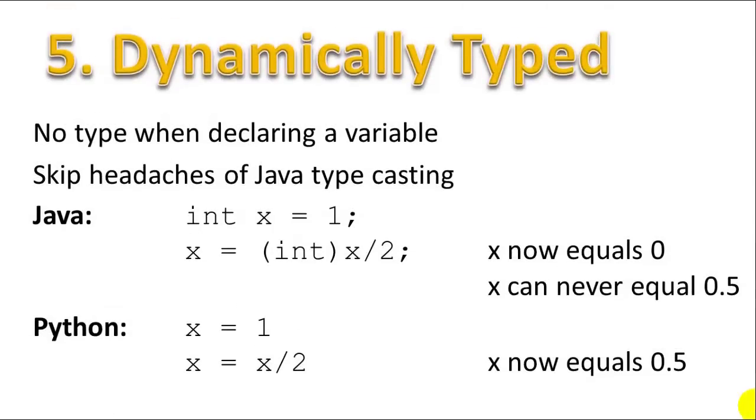So number five, Python is a dynamically typed language. Let me explain what that means. You don't have to declare the type when you're declaring a variable. So you can skip the headaches of typecasting and declaring variable types when you declare a variable.